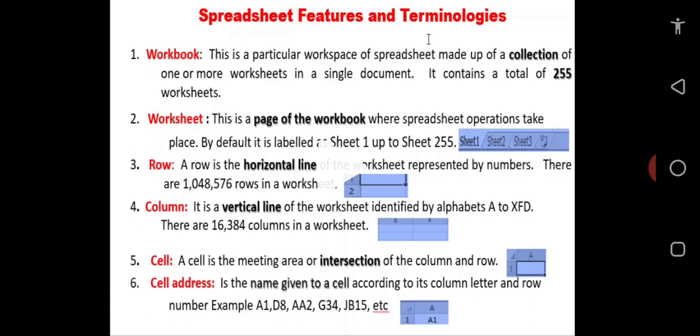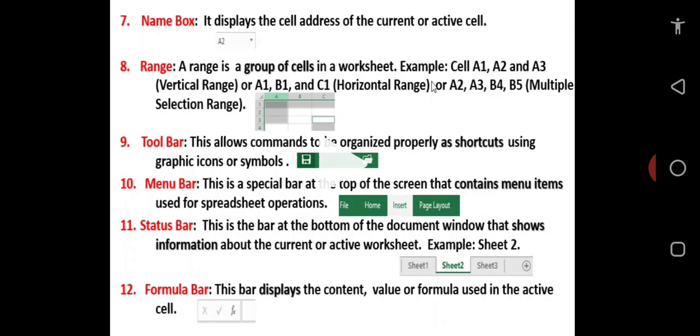To get the cell address A1 as seen on the screen clip, you consider the intersection of column A and row 1 to have a cell address A1. The name box displays the cell address of the current or active cell.